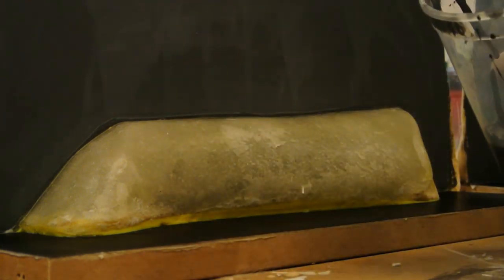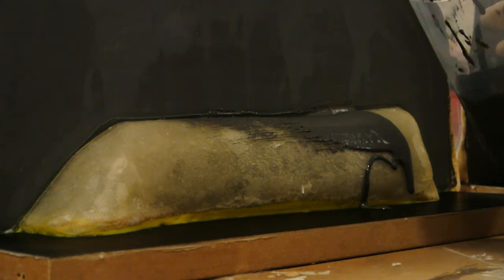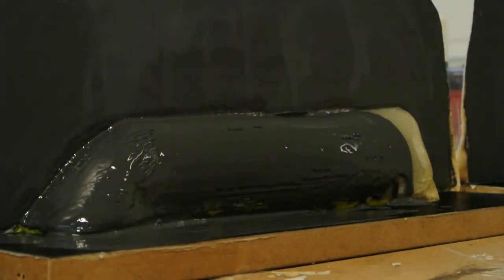Now for the vinyl ester spray again. Just paint it on, make sure everything is fully covered, and add two coats again.